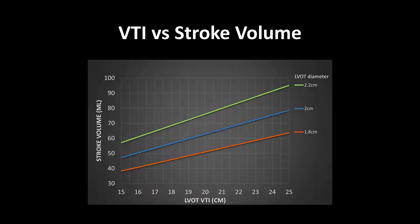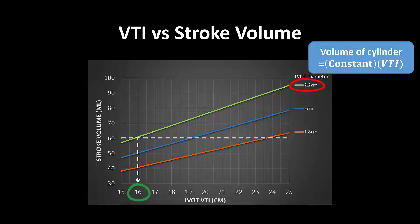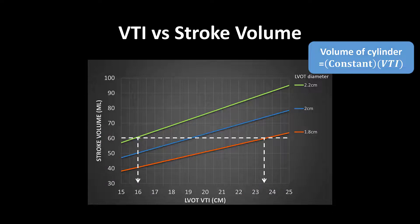Luckily, LVOT diameter does not change, and thus in the equation for the volume of a cylinder, that initial part of the equation stays constant — it's the VTI that changes from moment to moment, day to day, as a patient's hemodynamics change. To be as precise as possible, we recommend measuring LVOT diameter when you can — but you only ever need to measure it once, because it should not, cannot, and will not change. A patient with a larger LVOT diameter of 2.2 centimeters only needs a VTI of 16 to generate a normal stroke volume of around 60 cc's, whereas a patient with a smaller LVOT diameter of 1.8 centimeters would need a VTI closer to 23.5 to generate the exact same stroke volume.